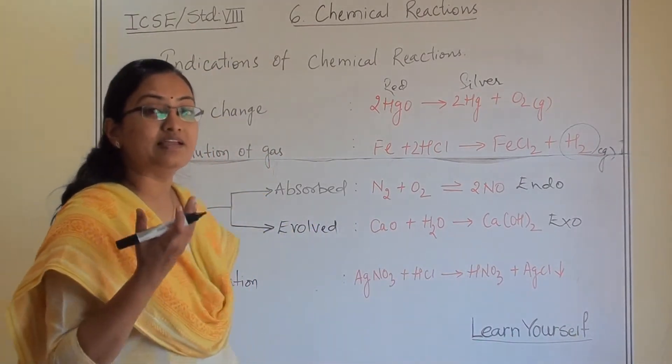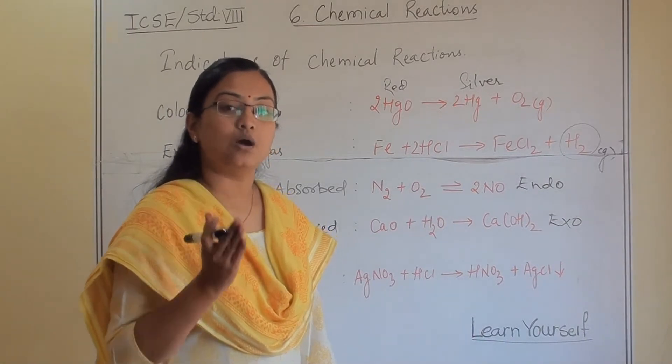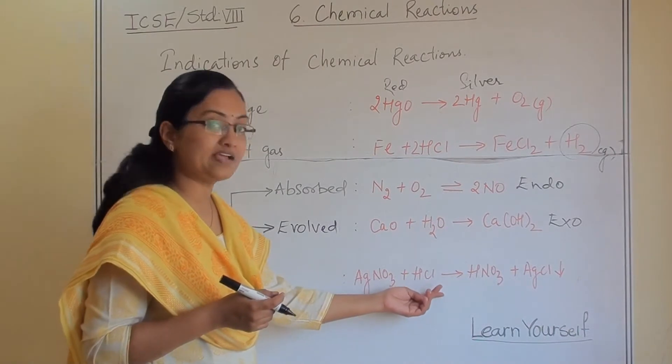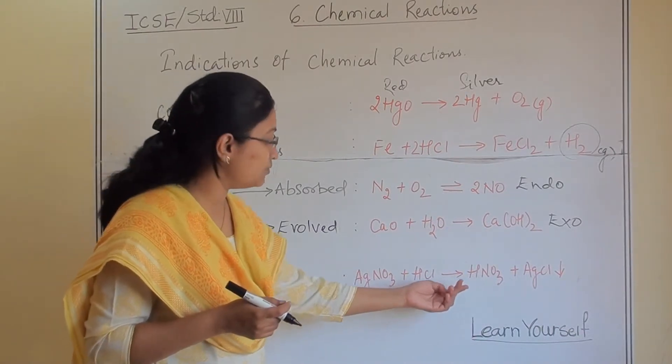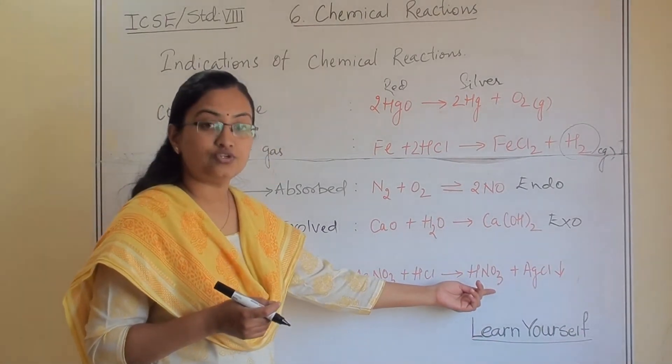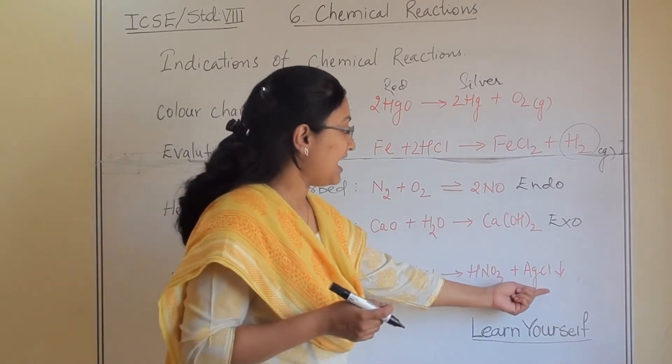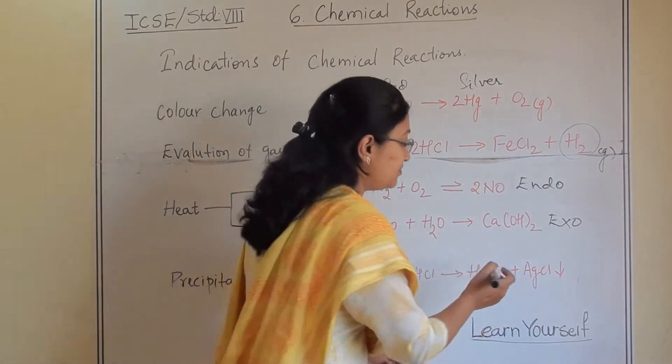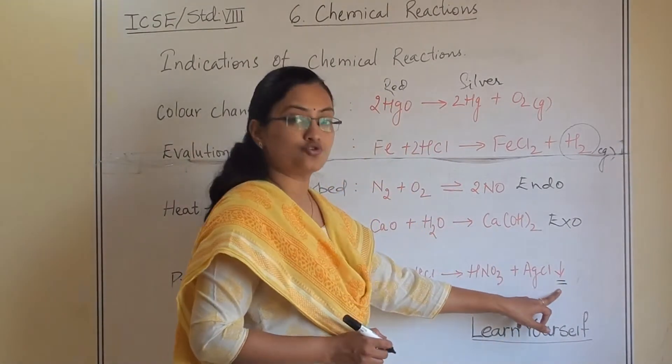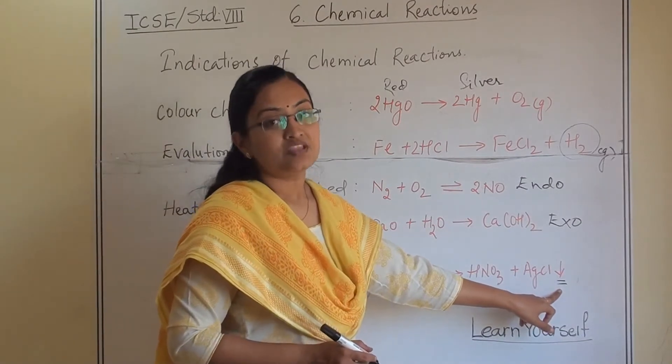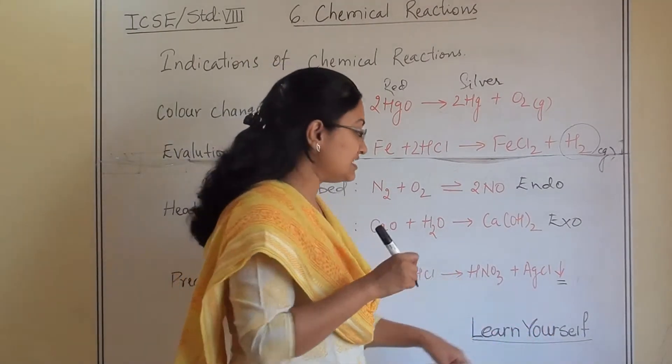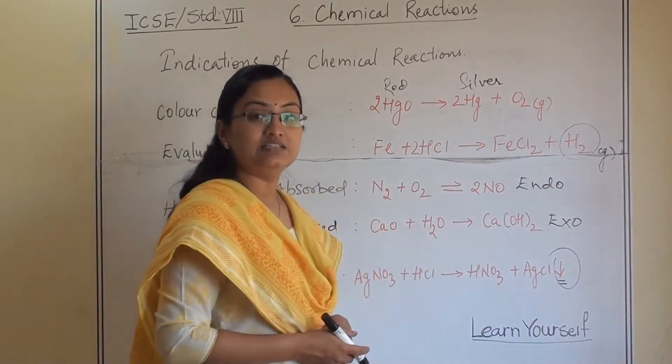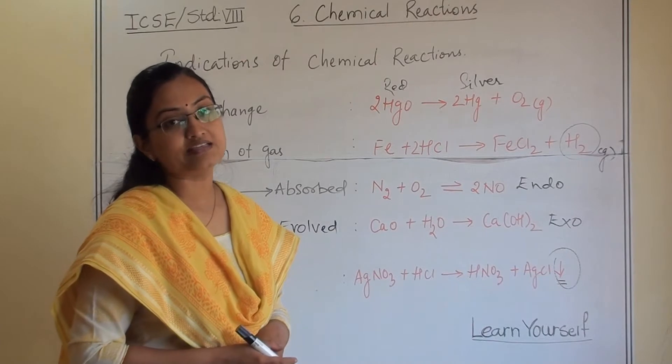Precipitation means we will get any solid compound at the end. When silver nitrate AgNO3 will react with hydrochloric acid, it will give us HNO3 nitric acid in the liquid form and AgCl silver chloride in the precipitation form. Now this sign we are showing for precipitate. That means it is in the solid form. The down arrow will tell us this will be as precipitate.